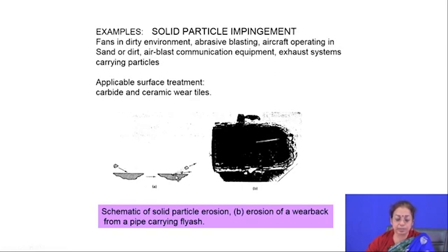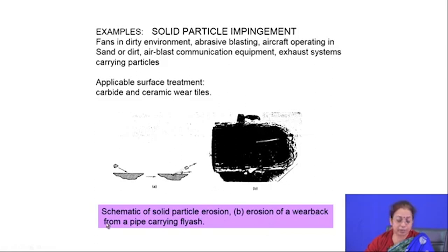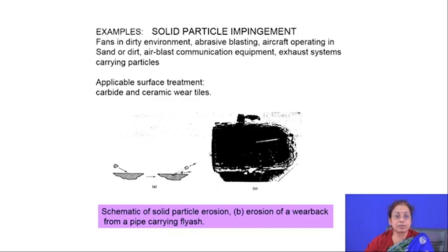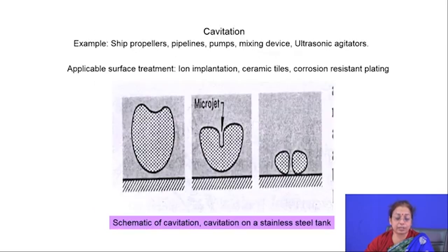The characteristic feature of solid particle impingement surfaces is the presence of small pits and holes, depending on the velocity, mass, and size of the particles. For example, erosion wear from a pipe carrying fly ash shows lots of impingement pits and holes. To mitigate this, applying a very thin hard layer on the surface by hard facing, physical vapor deposition, or chemical vapor deposition can minimize the probability of solid particle impingement.